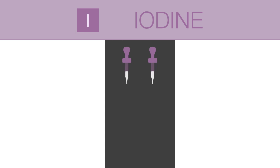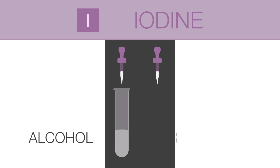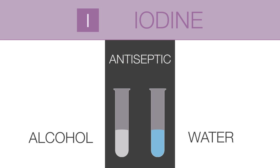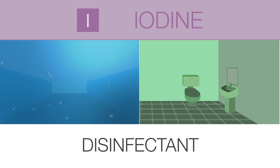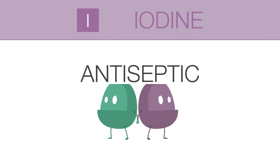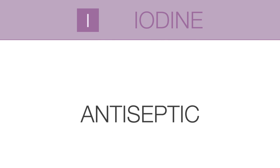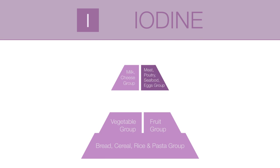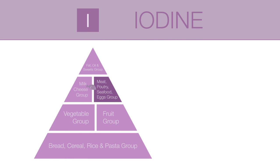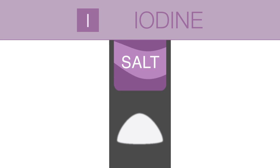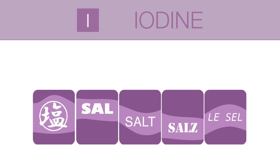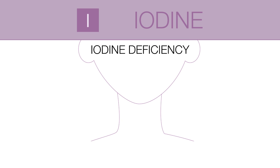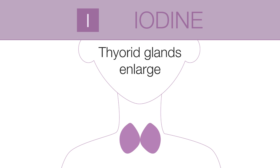We can dissolve iodine in either alcohol or water to be used as an antiseptic. We discussed sodium hypochlorite as a disinfectant. An antiseptic also kills germs, but is mild enough to be used on skin. We actually need some iodine in our diet, and this iodine can come from seafood or iodized salt. In fact, most commercial salt is iodized. An iodine deficiency can lead to a condition where the thyroid glands enlarge, forming a goiter.